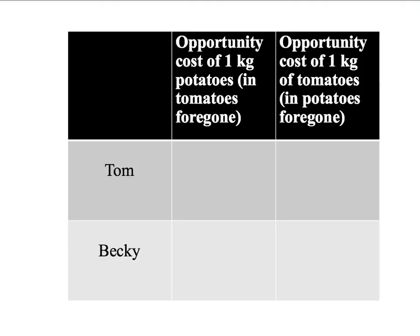What is the opportunity cost to Tom of producing one kilogram of potatoes? If he produces potatoes, he can't use that same time to produce tomatoes. So his opportunity cost of producing one kilogram of potatoes is the tomato production he gives up. It takes Tom four hours to produce one kilogram of potatoes, but eight hours to produce one kilogram of tomatoes. In the four hours he uses to produce a kilogram of potatoes, he could have produced half a kilogram of tomatoes. So Tom's opportunity cost of one kilogram of potatoes is one-half kilogram of tomatoes forgone.